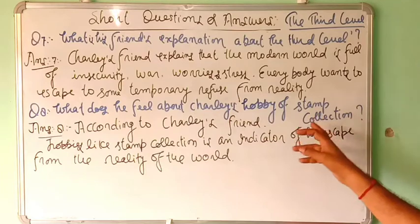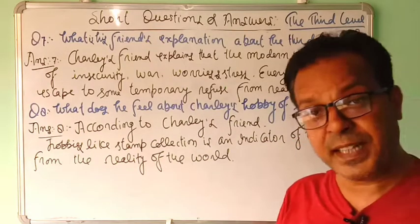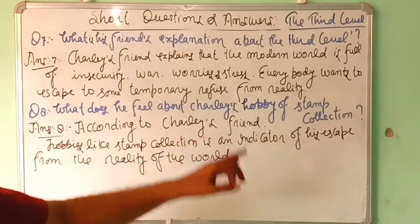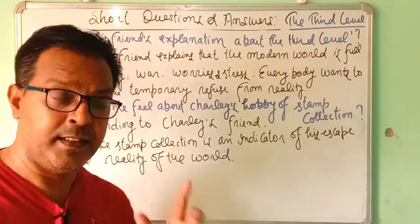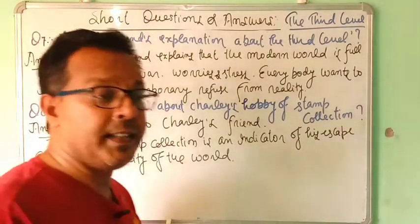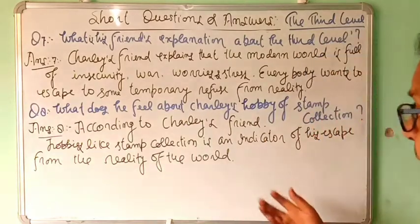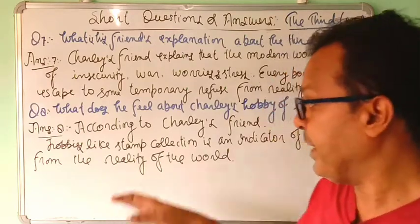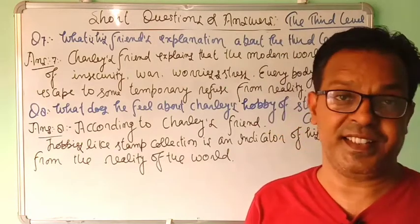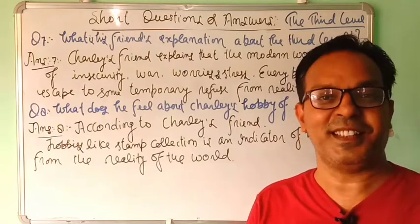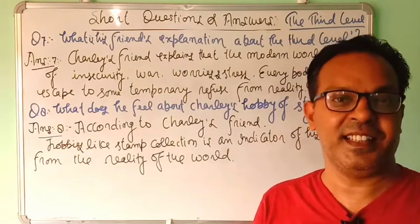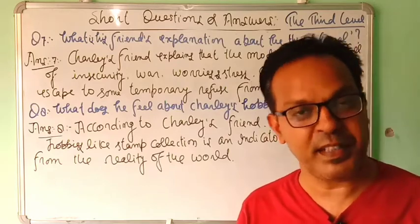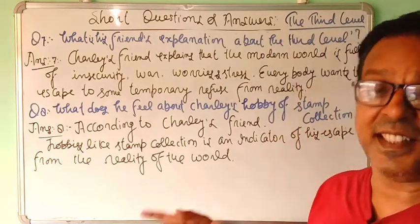Question Number Eight: what does his friend feel about Charlie's hobby of stamp collection? According to Charlie's friend Sam the psychiatrist, hobbies like stamp collection and collecting old notes are an indicator of his escape from the reality of the world. As a teacher, I'd add: always looking into history and talking about the past indicates we are not satisfied with our present — as is happening with Charlie.